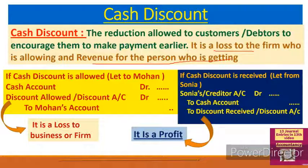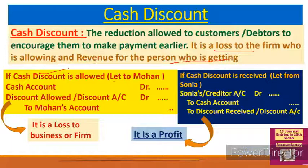Cash discount is a loss to the firm — whoever allows the discount incurs a loss. It is revenue for the person who receives it — the one who gets the discount treats it as income. We must keep in mind: for the one who allows discount, it is a loss; for the one who receives it, it is income/revenue.